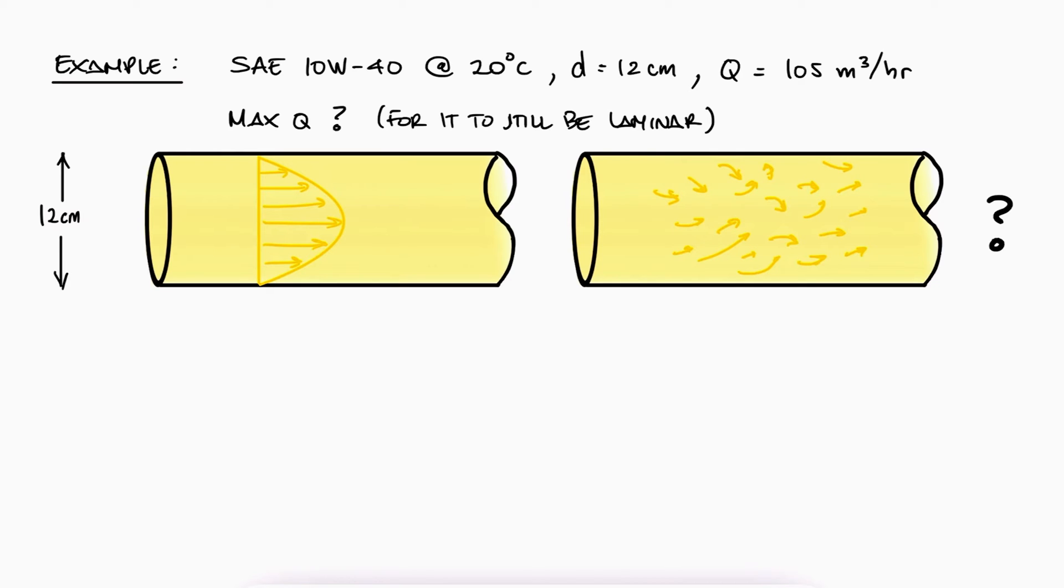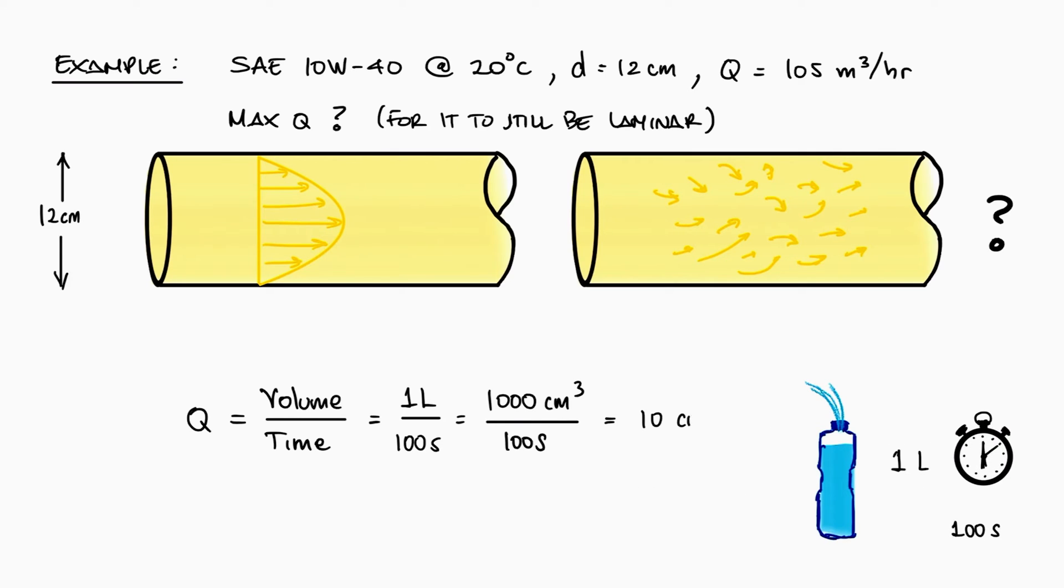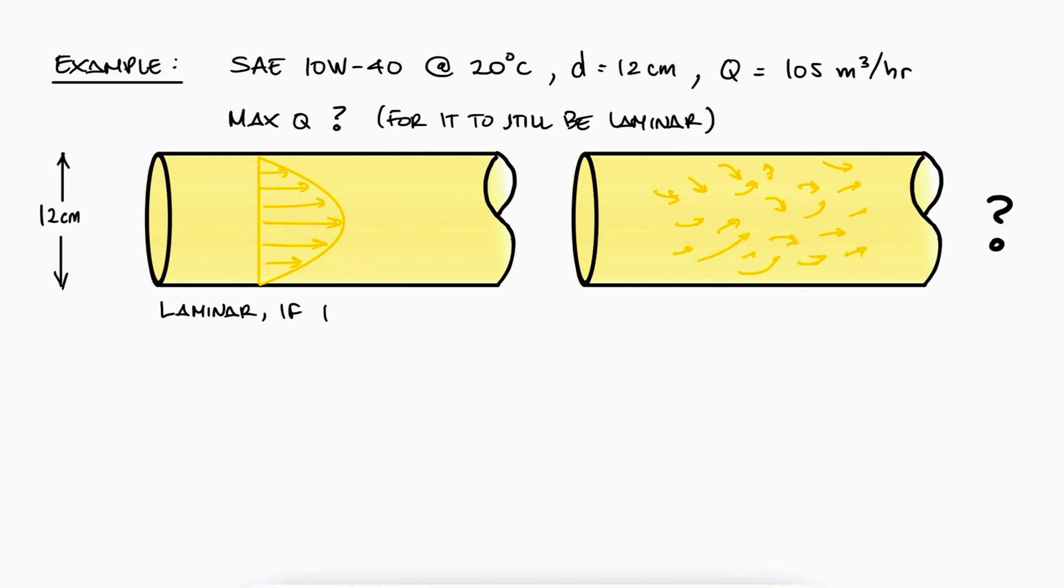Volume flow rate can be calculated by measuring any volume in any amount of time. For example, if it takes 100 seconds to fill a 1 liter bottle, the volume flow rate is 1000 cm³ divided by 100 seconds, or 10 cm³/s. How do we determine the Reynolds number for the SAE oil?